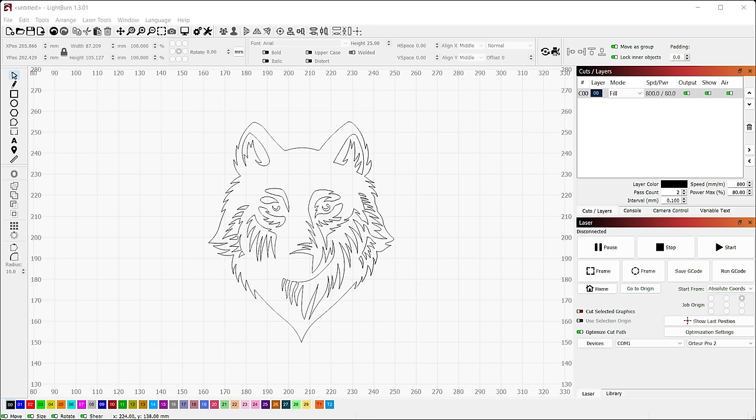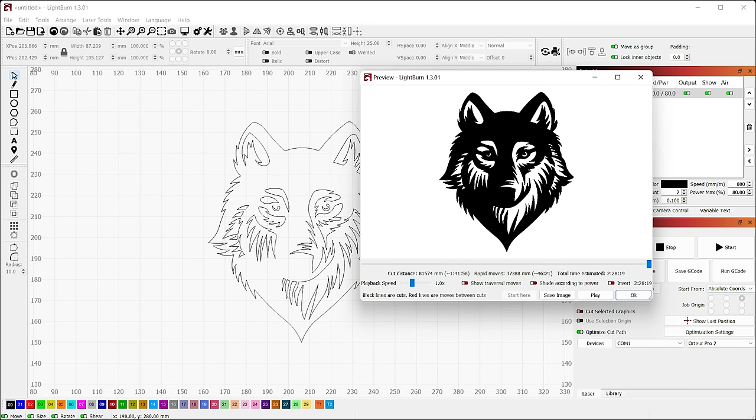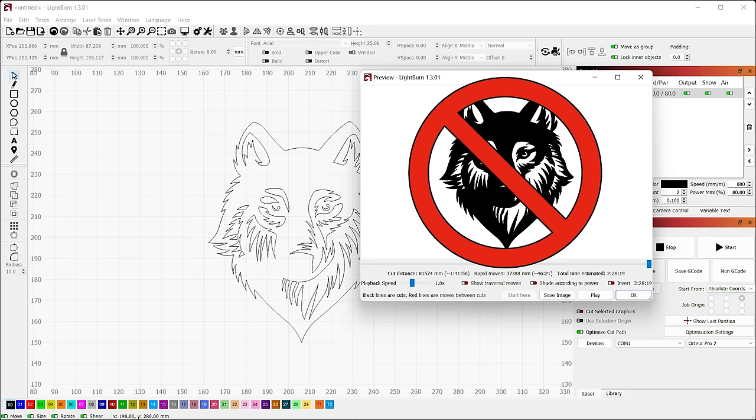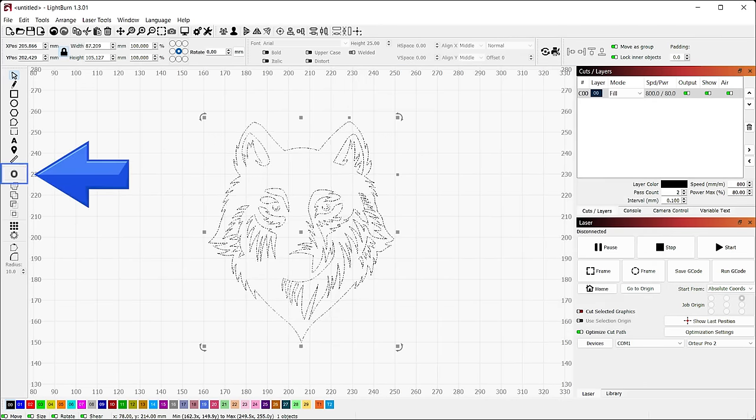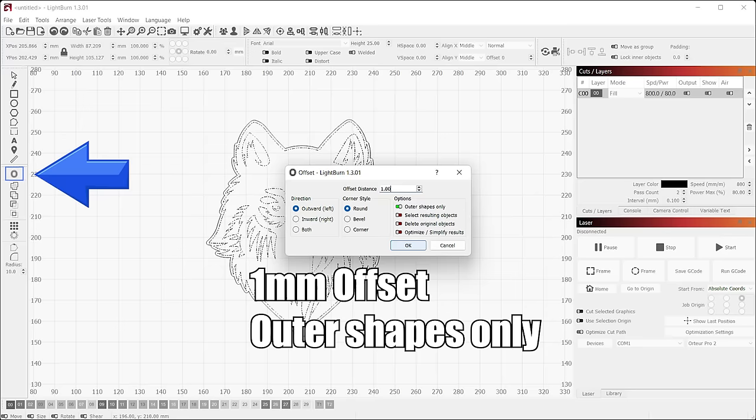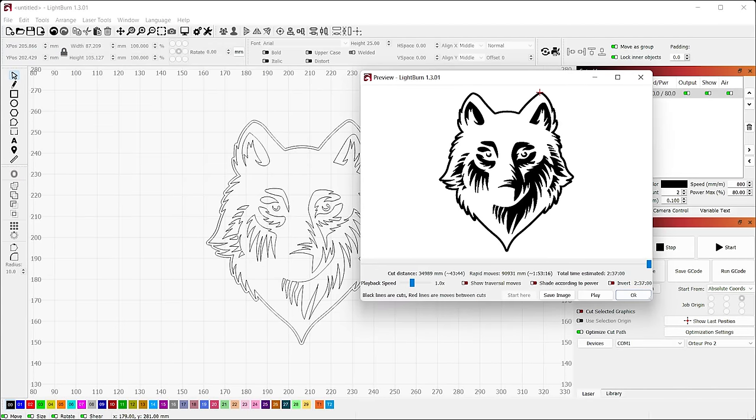Got my wolf here in Lightburn. If I preview this now, it is going to engrave all the areas I don't want it to. So in order to flip it, so it's going to engrave the white areas you see on this image, and I'm going to add an offset of one millimeter, and now if we preview again, it's going to engrave where I want it to.